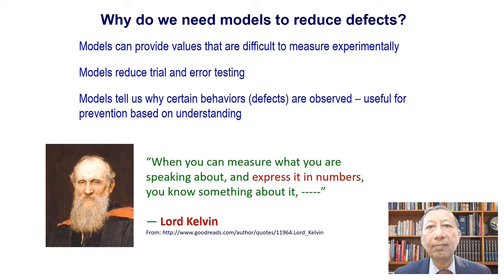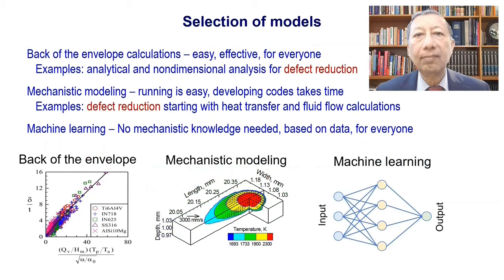Here is a quotation by Lord Kelvin: "When you can measure what you are speaking about and express it in numbers, you know something about it." Models help us to do just that. It is important to select the right model, and here we classify them into three categories. First, back of the envelope models, which include both analytical and dimensional analysis based models — and it's good to start here. Next, mechanistic models based on physics; for these, physical processes must be well understood. When the mechanism is not well understood but a reasonable volume of data are available, machine learning is a good choice. We will consider examples of both mechanistic models and machine learning.